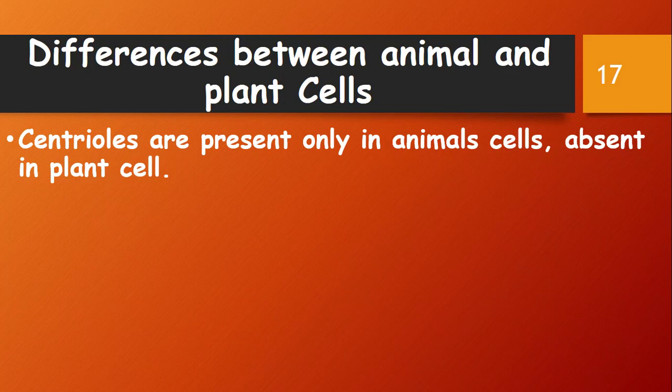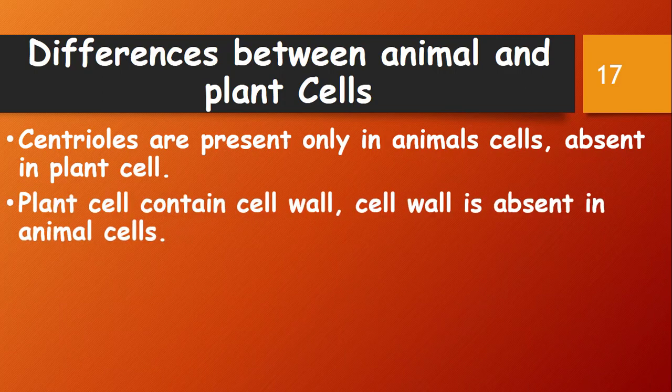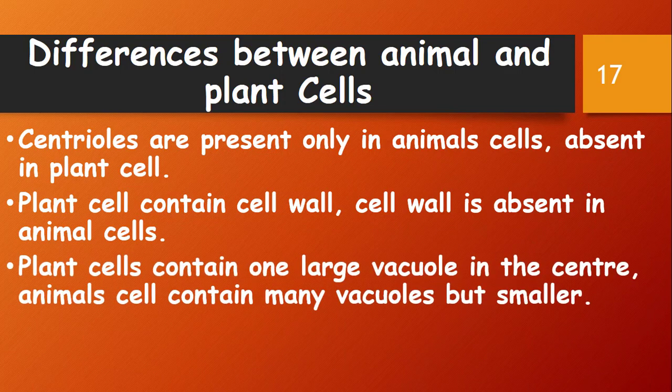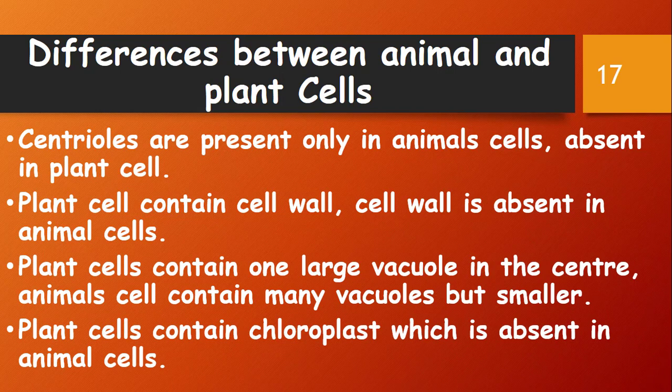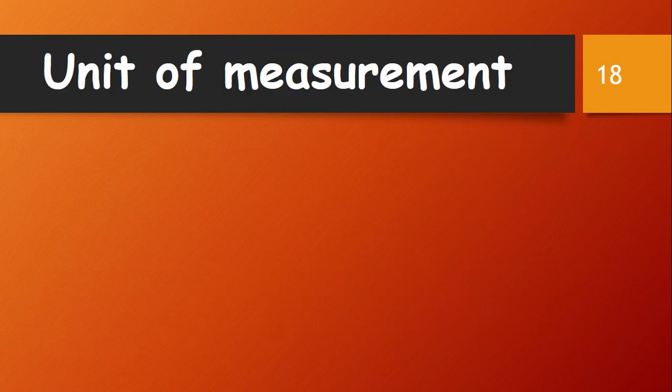Differences between plant and animal cells: centrioles are present only in animal cells but absent in plant cells. Plant cells contain a cell wall, which is absent in animal cells. Plant cells contain one large central vacuole, while animal cells contain many smaller vacuoles. Plant cells contain chloroplasts, which are absent in animal cells.